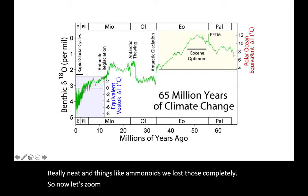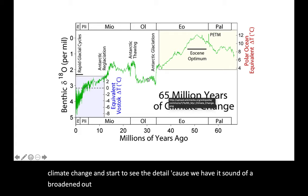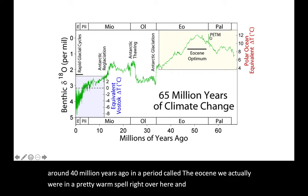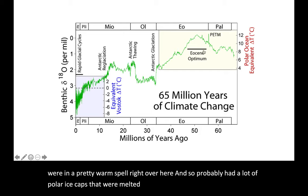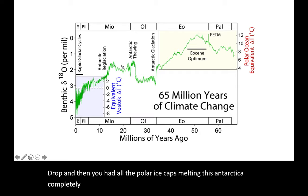Now let's zoom in a little bit and look at the last 65 million years of climate change. You can see back around 40 million years ago in a period called the Eocene, we were actually in a pretty warm spell. Probably the polar ice caps were almost completely melted at that time. Then the temperature went down gradually, and then just dropped as we got to this Antarctic glaciation — a real sudden drop. Then you had the polar ice caps melting, Antarctica completely thawing out, and then Antarctica staying thawed.